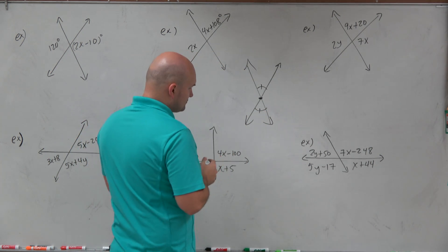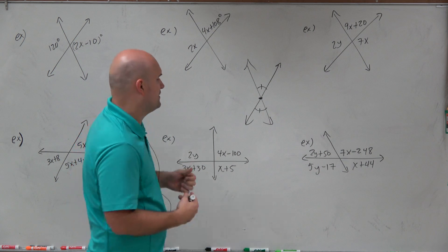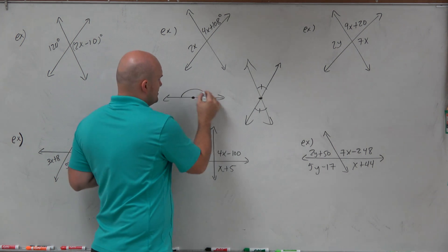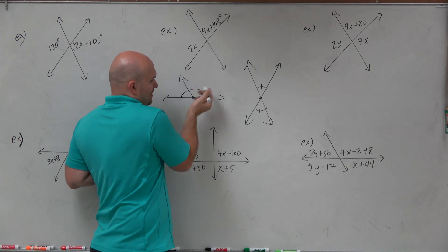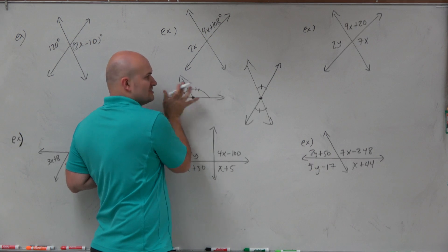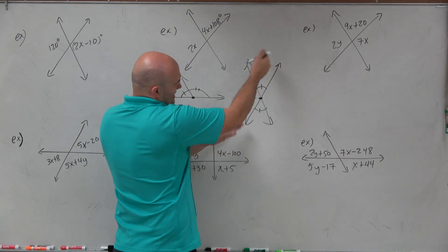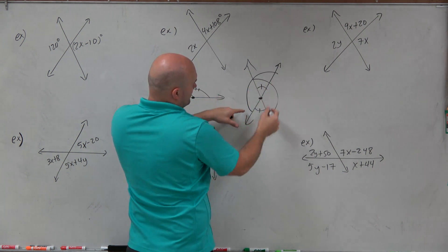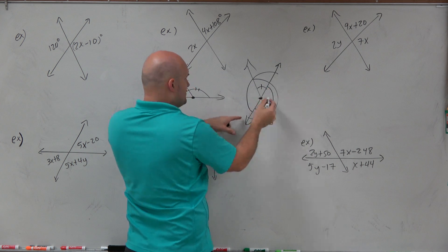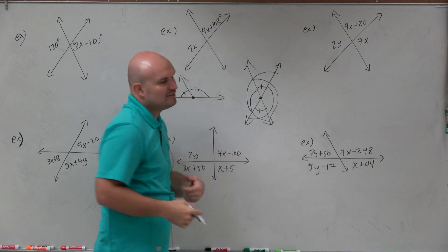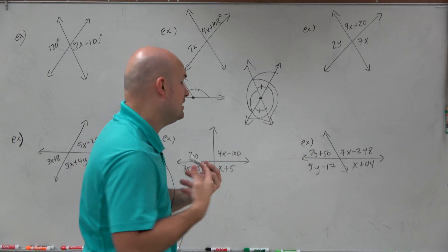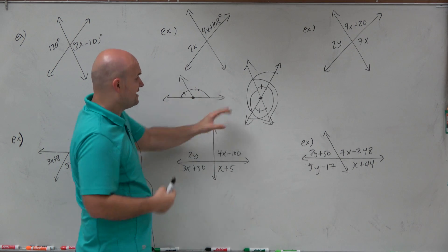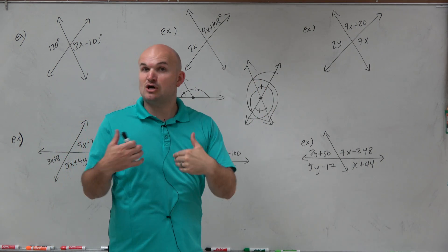We also create supplementary angles. A straight line is 180 degrees. So if I break that angle up into two different angles, the sum of those two angles adds up to 180. Every one of these straight lines has been broken up by your intersecting line. So we're going to use supplementary angles — two angles add up to 180 — and vertical angles — two angles are congruent — to solve for x and y.